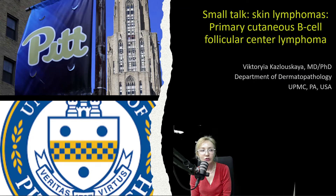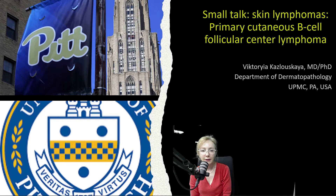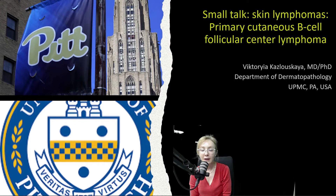Hello, everyone. I want to introduce myself. I'm Victoria Kozlowska. I'm an assistant professor at the Department of Dermatopathology at UPMC in Pittsburgh University. Today, I want to start a talk about skin lymphomas, and particularly about primary cutaneous B-cell follicular center lymphoma. In the first part of the lecture, we'll review a typical case with histopathological and clinical presentation. And in the second part, it will be a dialogue with the director of Center of Excellence of Lymphomas in Pittsburgh University, Oleg Akilov.